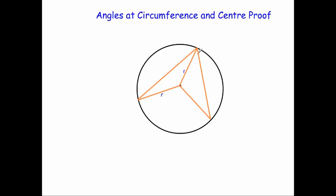So this is an isosceles triangle. I'm going to mark this angle here as X and this angle up here as X also. So we've got our isosceles triangle with X and X. Let's mark in this other angle as W, just to show that this angle has a certain size.